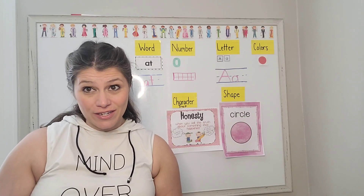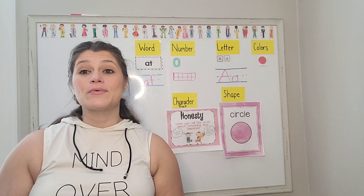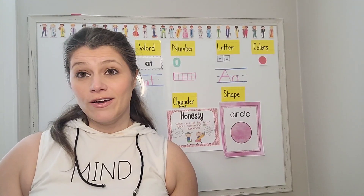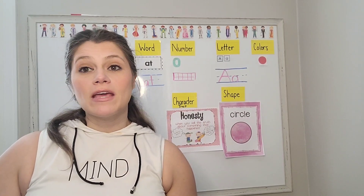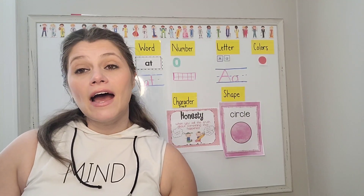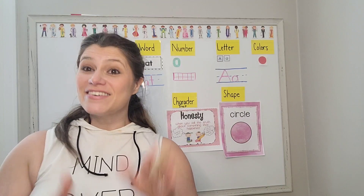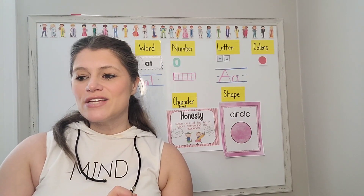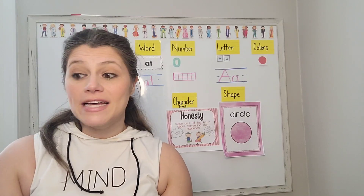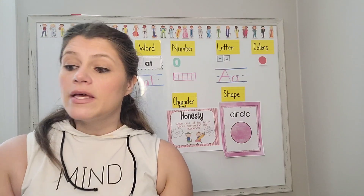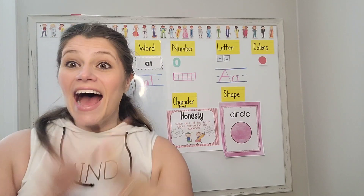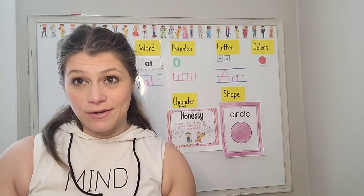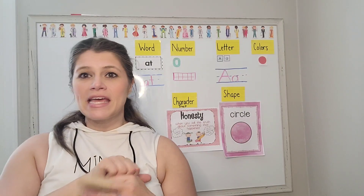Now we're going to learn a little song — are you ready to sing? I'm a little circle, nice and round. There are no corners, there are no sides. You can make me roll easily, because I'm as round as can be. Yay, good job guys! Circles have no sides and no corners — or, if we're being fancy mathematicians, no vertices.